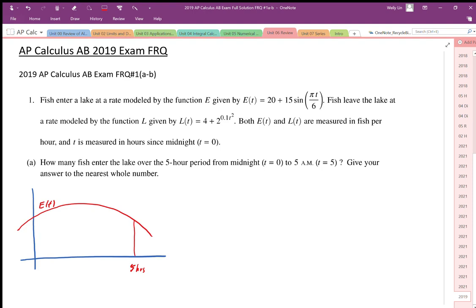This set of solutions is for the 2019 AP Calculus AB exam free response section. Question number one says the fish enter a lake at a rate modeled by the function E, where E of t is equal to 20 plus 15 sine pi t over 6.